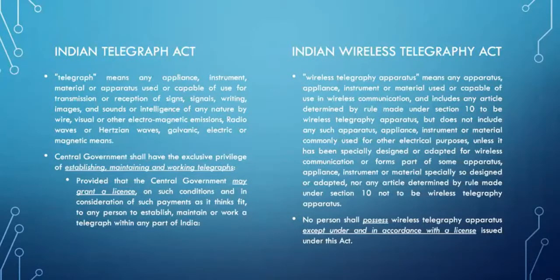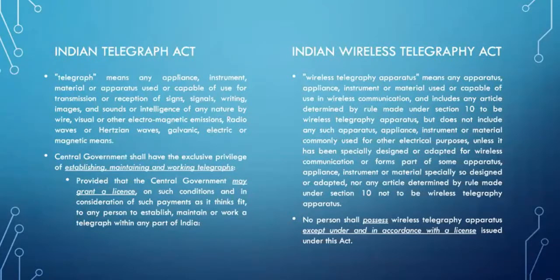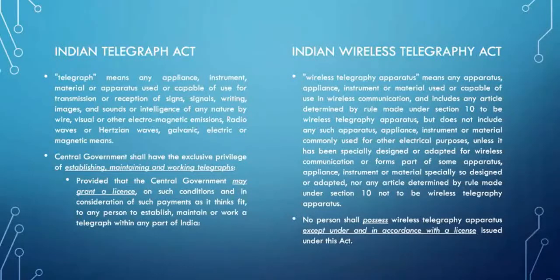In fact, it is using this particular provision of exemption that the public at large — including us — are using the telephones or mobile phones that we have. The only difference is that the equipment used by the public at large has been de-licensed by the government by way of a general exemption, whereas when you operate a telecom network as a company, you are given a limited right to operate under a specific license.